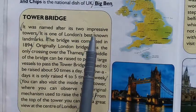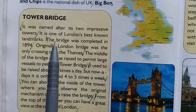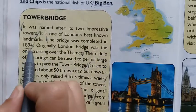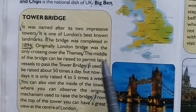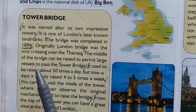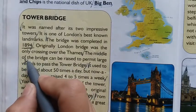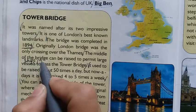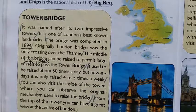Tower Bridge was named after its two impressive towers. It is one of London's best known landmarks. The bridge was completed in 1894. Originally, London Bridge was the only crossing over the Thames. The middle of the bridge can be raised to permit large vessels — ships, boats, launches, etc. — to pass. It used to be raised about 50 times a day, but nowadays it is only raised 4 to 5 times a week.